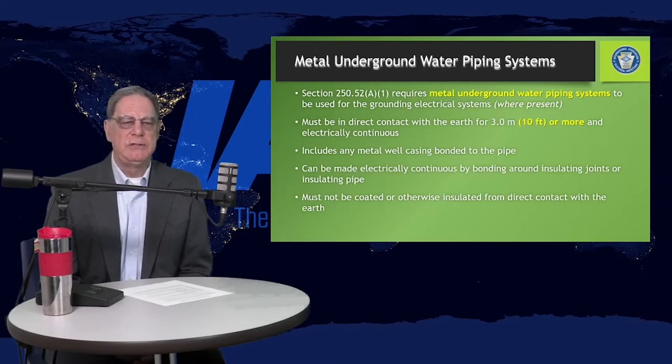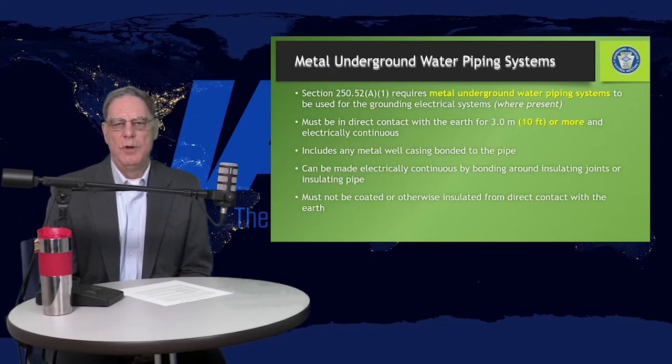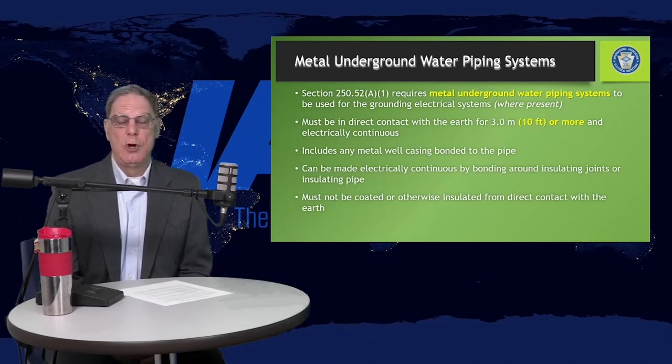It must not be coated or otherwise insulated from direct contact with the soil. So again, one thinks about ductile iron pipe used for water mains in the street, but ductile iron has a coating on it to prevent it from corroding. That coating typically makes it non-conductive to the soil. So it itself is not good to use as an in-ground electrode.